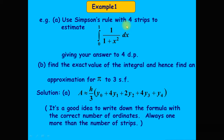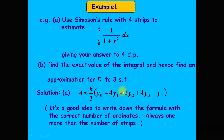In this example, since we have four steps, we have five range points: y₀, y₁, y₂, y₃, and y₄ for the function y = 1/(1 + x²). y₀ and y₄ are not multiplied by four or two. y₁ and y₃ are multiplied by four, and y₂ is multiplied by two.